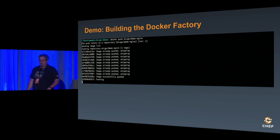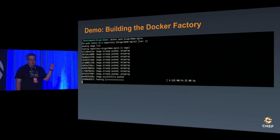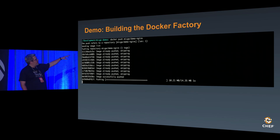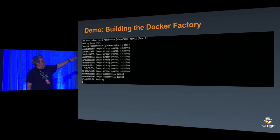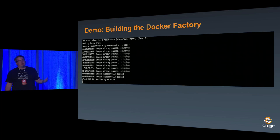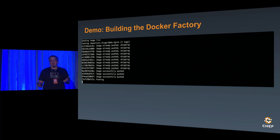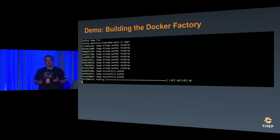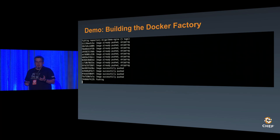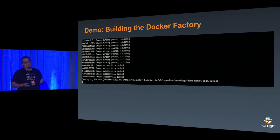The layers already in the base Ubuntu image don't need to be pushed again — all we're really pushing are the deltas for the additional steps added for this specific build of the container. This is great because you're not uploading a gigantic 450 megabyte image every time — you're only uploading maybe 40 megabytes worth of changes from the base container.